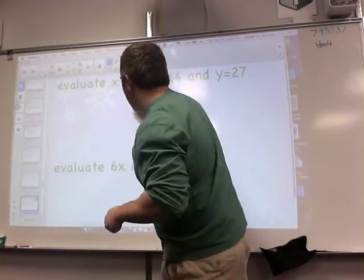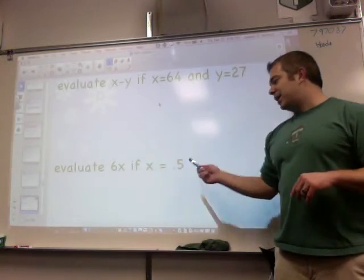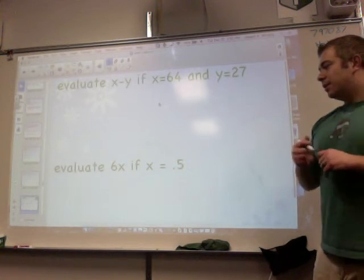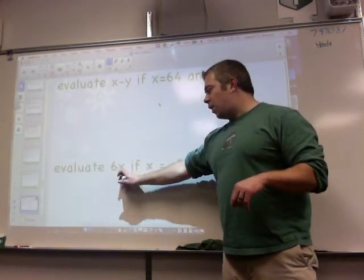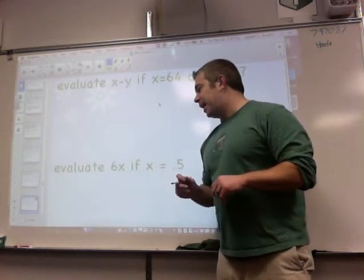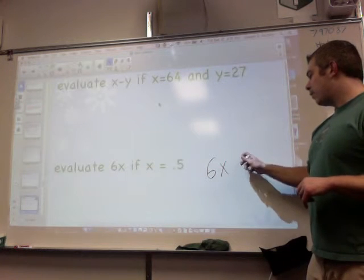Down below I have evaluate 6x if x equals 0.5, which is 1.5 or 5. So it's going to be, since there's no operation there, if you remembered that means they're going to multiply. So I'm basically doing 6 times 0.5.